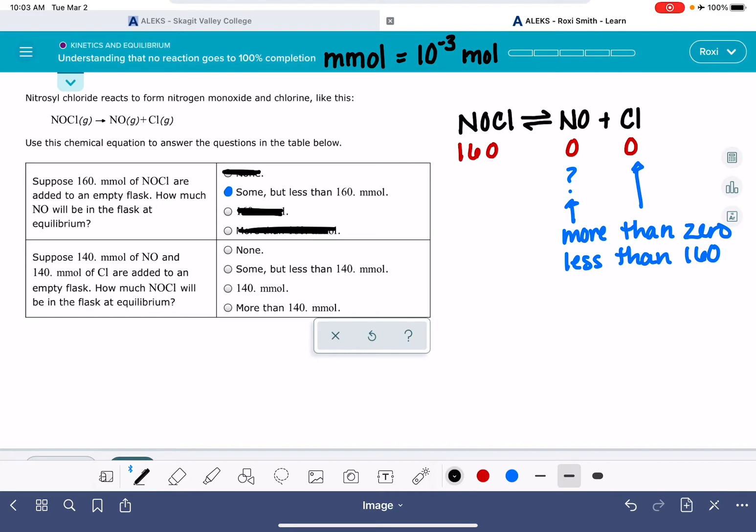All right, we've got a second scenario to look at. This is using the same equation. So I'm going to write the equation again, NOCL in equilibrium with NO and CL. And this time it says that we have 140 millimoles of NO and 140 millimoles of CL in an empty flask, which means we're starting with zero NOCL. And it wants us to figure out how much NOCL we're going to have.